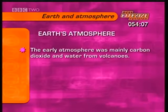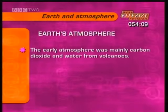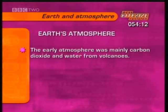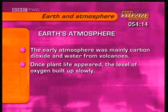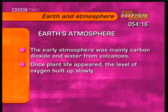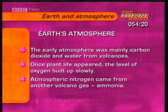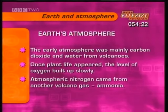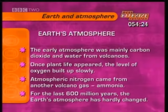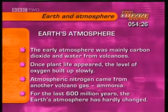Levels of oxygen built up very slowly. When there was enough, about 600 million years ago, life exploded on this planet, and since then the atmosphere has hardly changed at all. So the early atmosphere was mainly carbon dioxide and water — gases which escaped from volcanoes. Once plant life appeared on the Earth, the level of oxygen built up slowly. Atmospheric nitrogen came from another volcanic gas, ammonia. For the last 600 million years, the Earth's atmosphere has hardly changed.